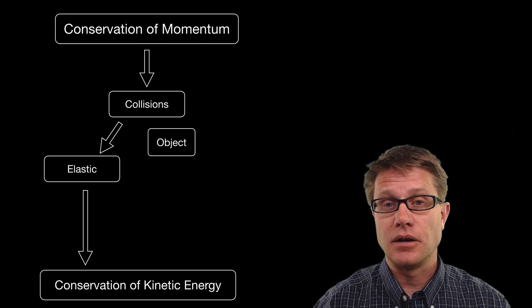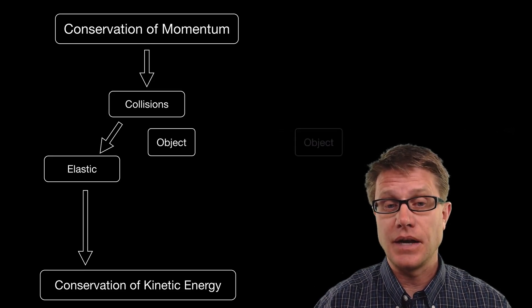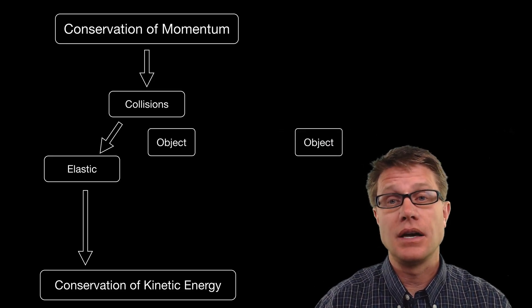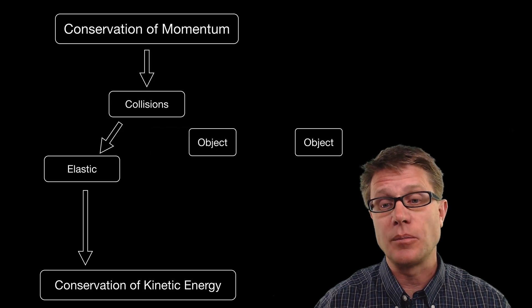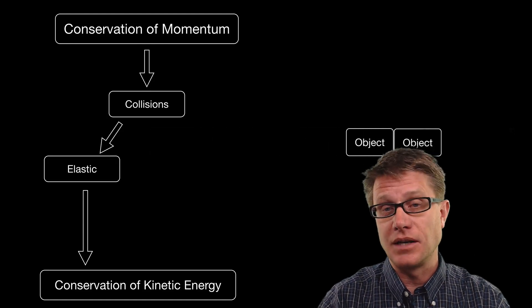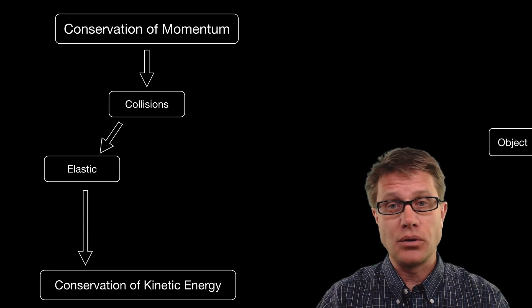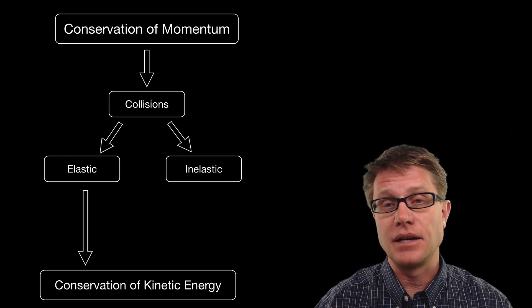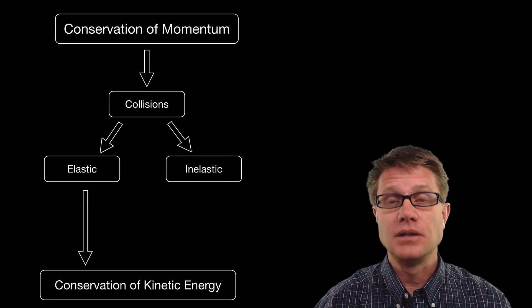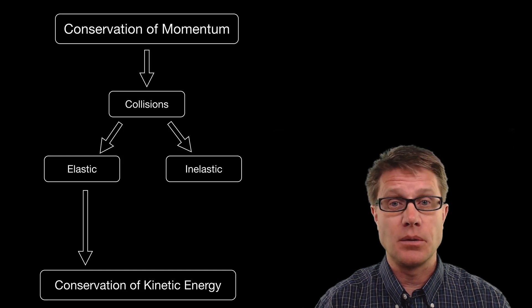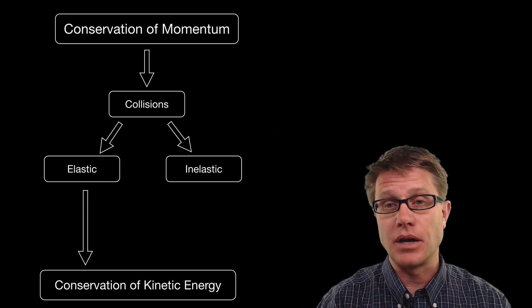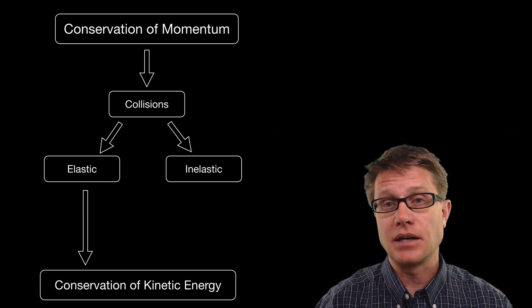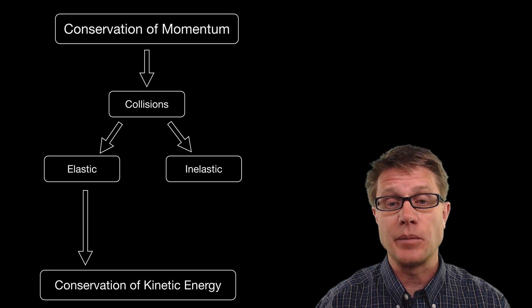Now we could also have another type of collision called an inelastic collision. And that is when one object hits another object and they lose some of that kinetic energy. Maybe they become connected or it could just run into a wall where they both eventually come to a complete stop. We would then call that an inelastic collision. Did we maintain conservation of linear momentum? For sure. We always do in every collision. Did we maintain kinetic energy? No. We have lost some of that speed.